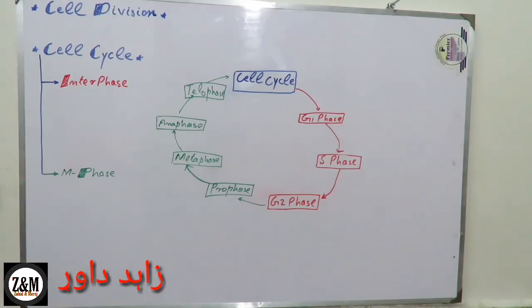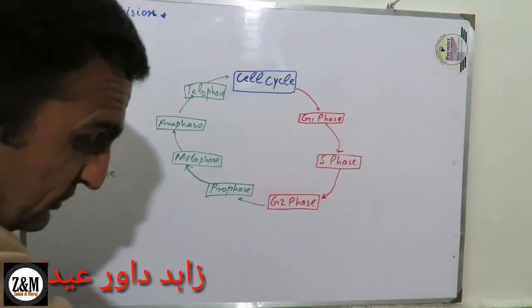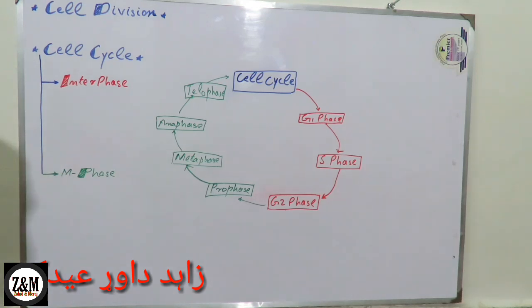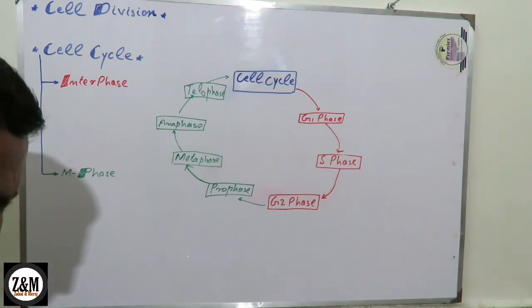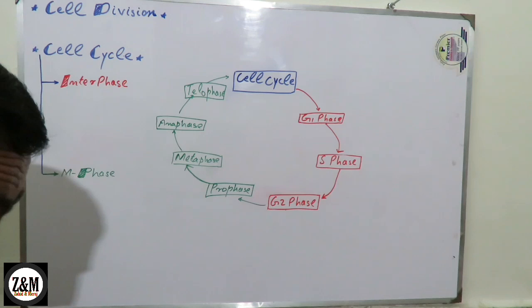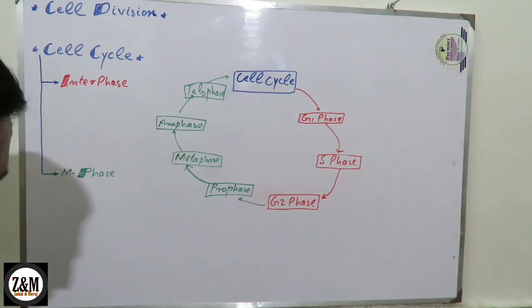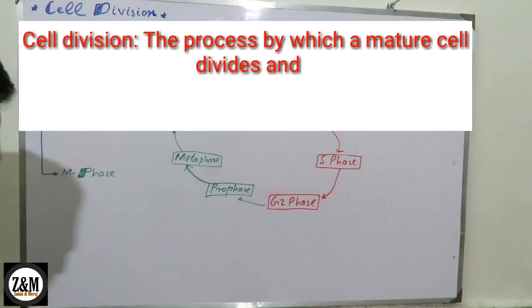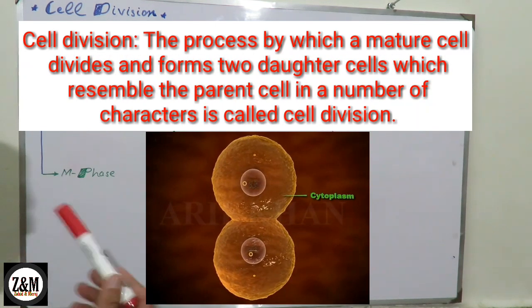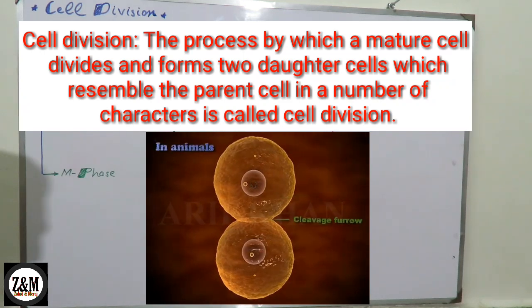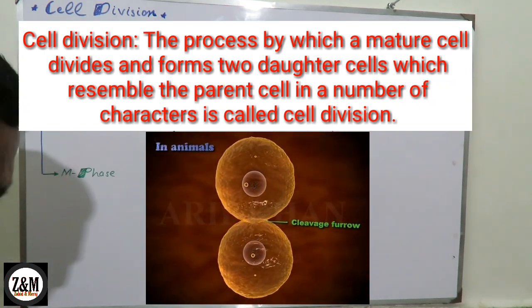In the name of Allah. The most important thing is the cell division and the cell cycle. The process by which a mature cell divides and forms two daughter cells, which resembles the parent cell in a number of characters, is called cell division.